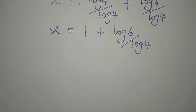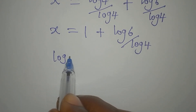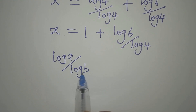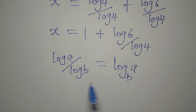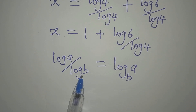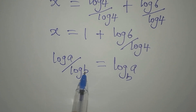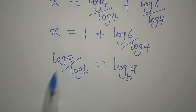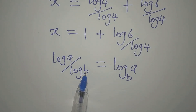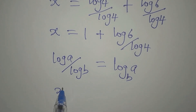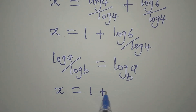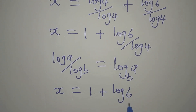Now we apply the change of base law: log a divided by log b equals log a to base b, provided both logs share the same base. Since both are base 10 here, we can apply it. The denominator log becomes the base, so log 6 divided by log 4 becomes log 6 to base 4. Therefore x equals 1 plus log 6 to base 4.